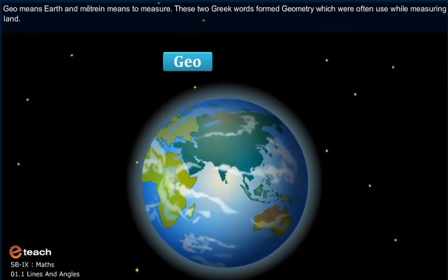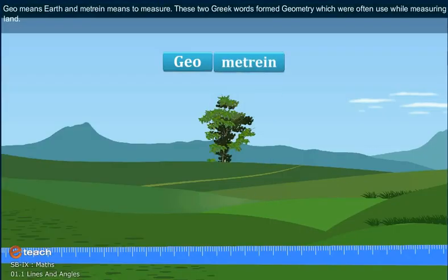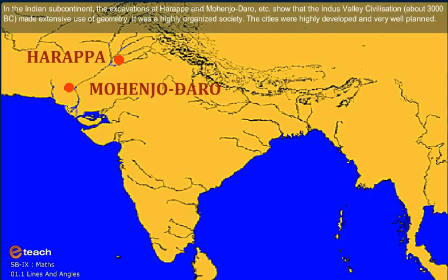Geo means Earth and Metron means Measure. These two Greek words form Geometry, which were often used while measuring land.